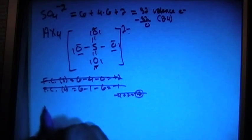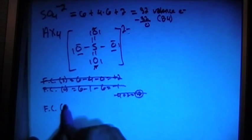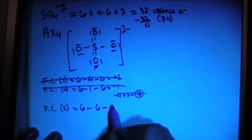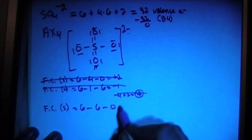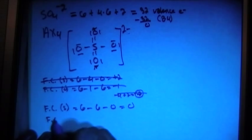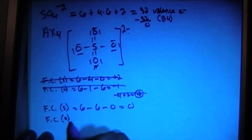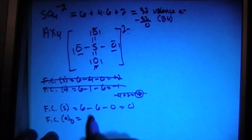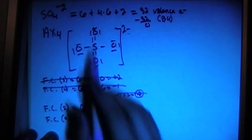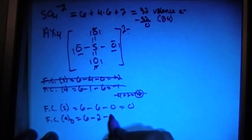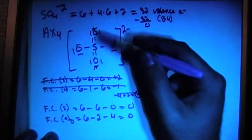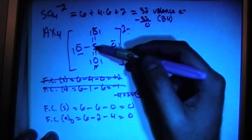So now we have the formal charge of sulfur is 6 valence brought in minus 6 bonds minus 0 non-bonding, and that gives you a formal charge of 0, which is much better. Now let's check the formal charge on the oxygens with the double bonds, and that's going to give us 6 valence brought in for each one, minus 2 bonds for each, minus 4 non-bonding for each, which is 0. So these two oxygens have a formal charge of 0 as well, along with the sulfur.